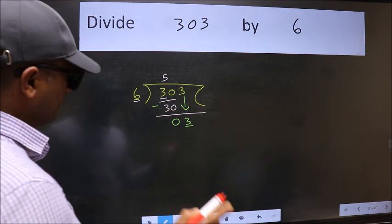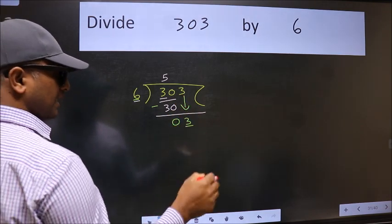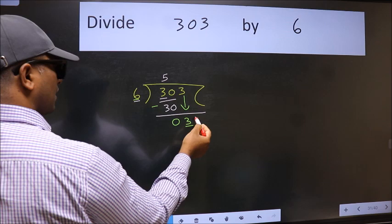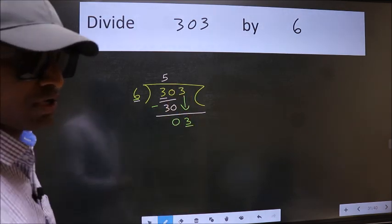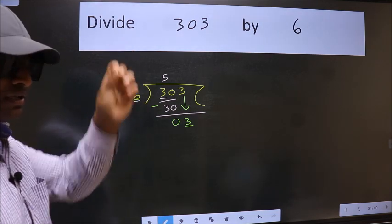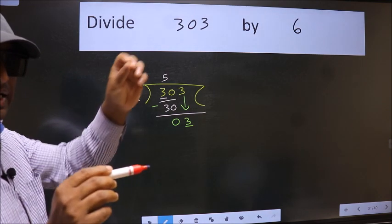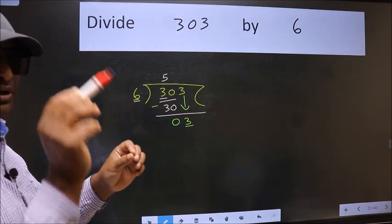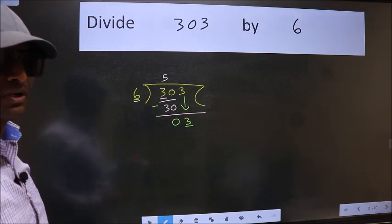Because just now you brought this number down, and in the same step you want to put a dot and take 0, which is wrong. I repeat: bring down the number and also put a dot and take 0 - both at the same step you should not do.